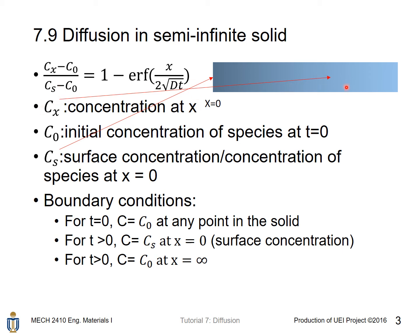Let's say I would like to set x at here. Then Cx is the concentration here. Cs is the surface concentration, or the concentration of species at x equal to 0, which is here, at the boundary position.